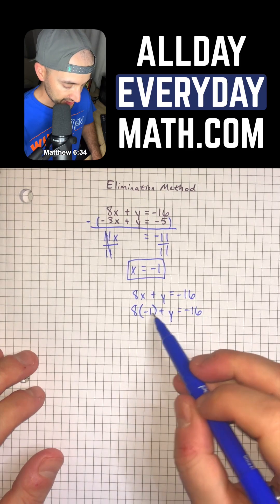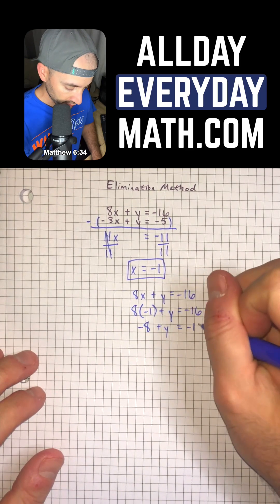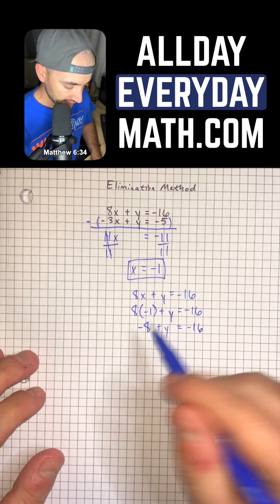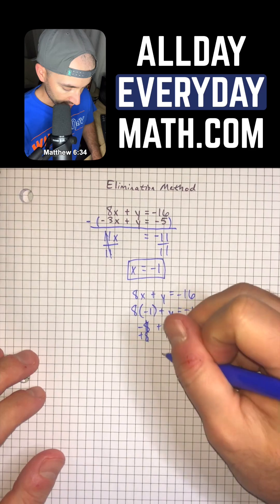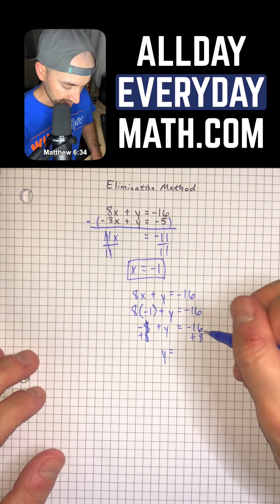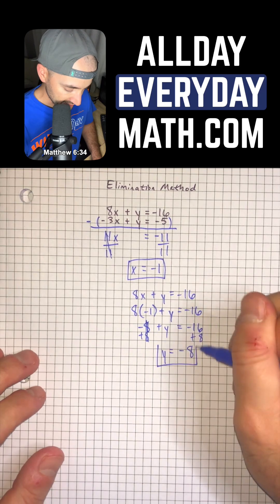So 8 times negative 1 is negative 8 plus y is equal to negative 16. And then we can cancel out the negative 8 by adding 8 to both sides to get y is equal to negative 16 plus 8, which is negative 8. And so y is equal to negative 8.